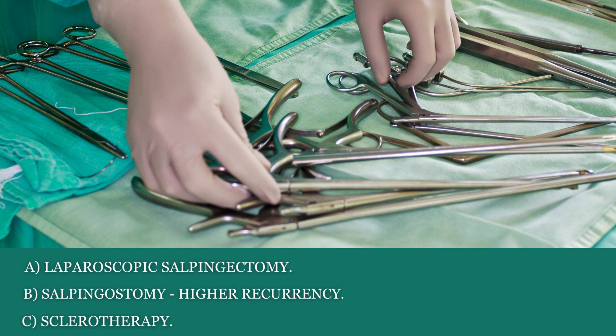Some may suggest a salpingostomy — opening the tube and draining the water, then leaving it as is. Unfortunately, the recurrence rate of hydrosalpinx is very high, so you may go to theater two, three, or four times draining the tube. Another method is sclerotherapy, where a chemical is used to cauterize the tube so it shrinks and the fluid is expelled. However, this also has a high recurrence rate.